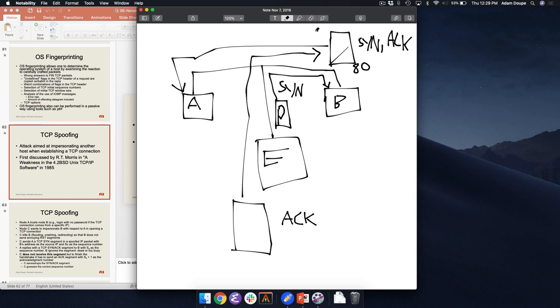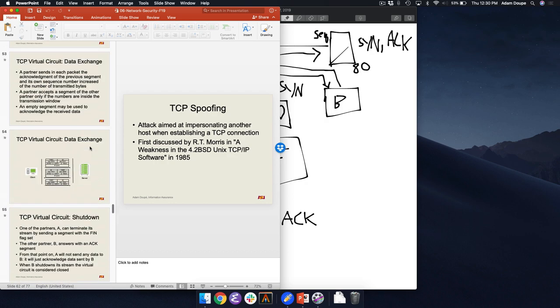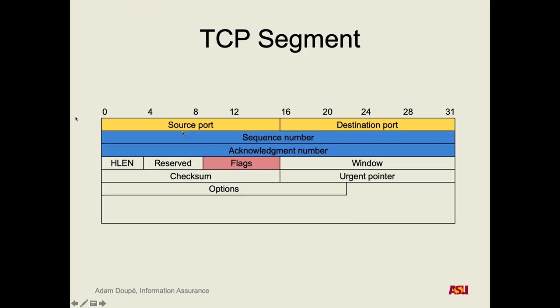Our entire ability to spoof TCP packets depends on our ability to either guess or obtain the sequence number Bob generates. Or we need to steal that packet. How big is the sequence number? 32 bits. That means the odds of guessing correctly are 1 in 2^32, assuming Bob is randomly choosing a sequence number.